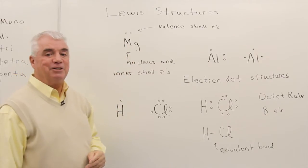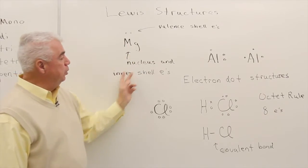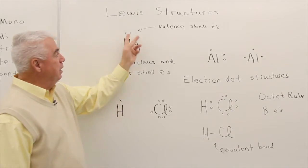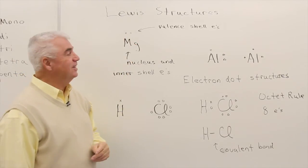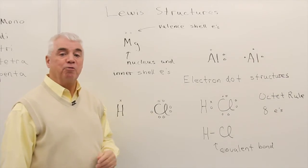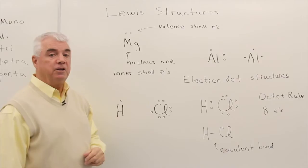The symbol magnesium stands for the nucleus and inner shell electrons. And then about this symbol, we've got two dots. Those are the valence shell electrons. Magnesium is in group 2a, has two valence electrons.